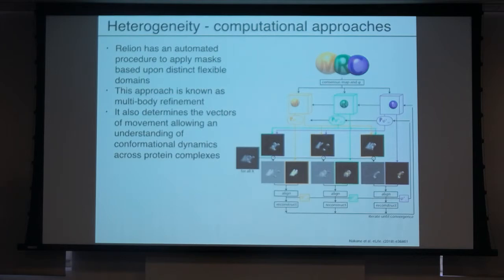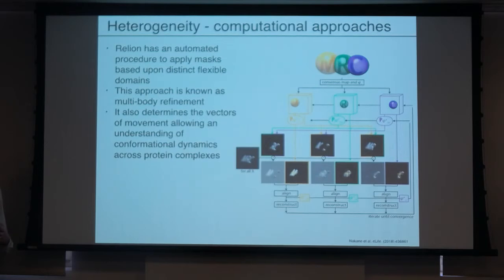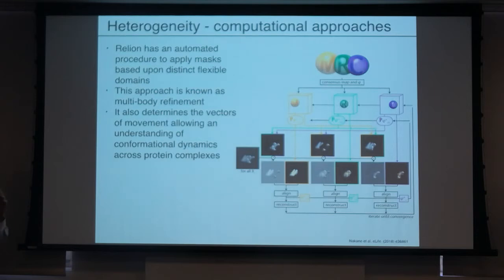In the end, do you report three different maps or one? I'm not sure what the current standard is — EM has always been a little fast and loose with reporting and validation. In my mind: deposit everything, report everything, let everyone in the field have that information. For one of our dynamic complex papers, we ended up depositing somewhere around 20 different maps — focus maps, full maps, composite maps. It's worth it to the community. Someone in California may have a new allosteric regulator that binds to an entirely different interface, and giving them access to a focused refined map of just that portion may help the community in a way you couldn't have foreseen previously.